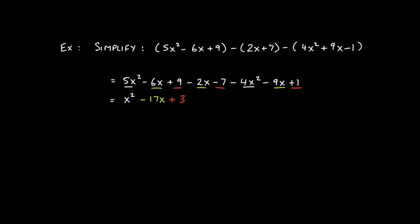The safe approach is to always distribute. For the first polynomial with a plus sign, 5x squared minus 6x plus 9 stays the same. But because of the minus sign before the second polynomial, there is really a negative 1 being distributed. Negative 1 times 2x gives negative 2x, and negative 1 times 7 gives negative 7. The same applies to the third polynomial's minus sign: negative times 4x squared gives negative 4x squared, and negative times 9x gives negative 9x.